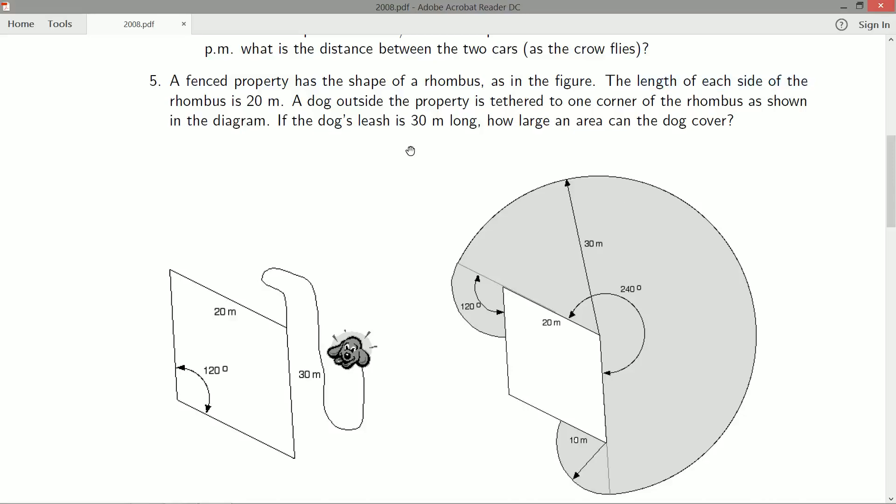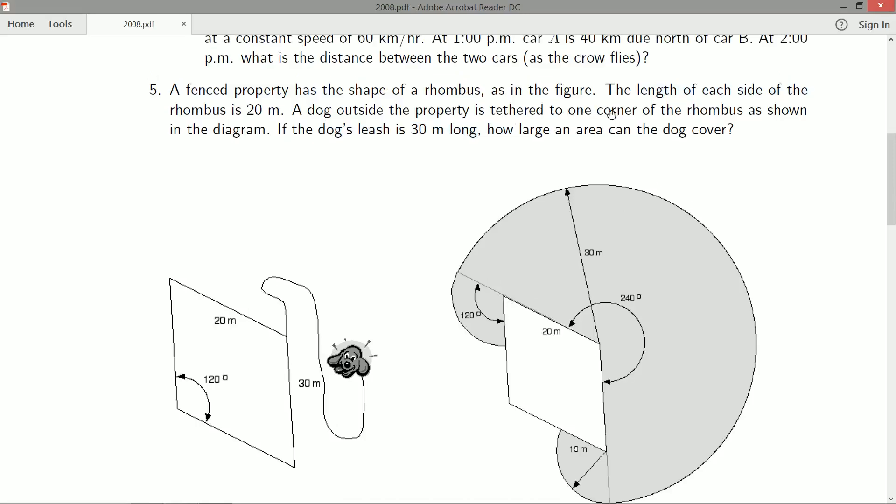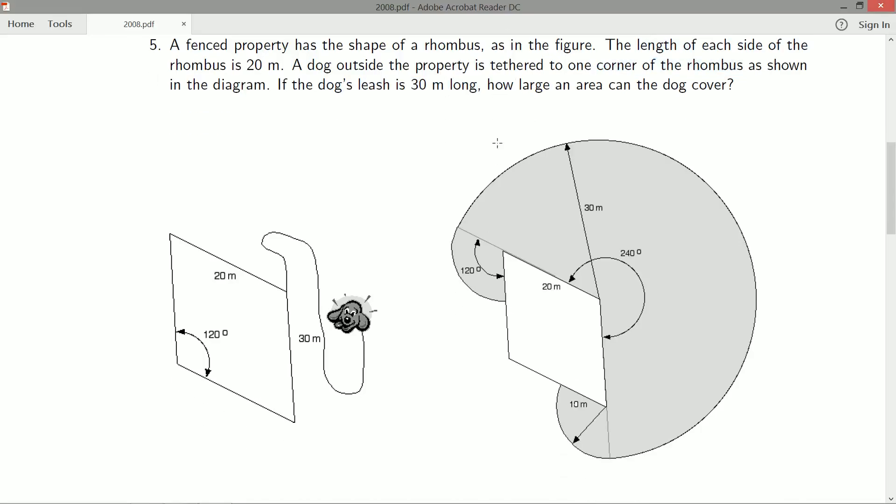A fenced property has the shape of a rhombus as in the figure. The length of each side of the rhombus is 20 meters. A dog outside the property is tethered to one corner of the rhombus as shown. Okay, there's our dog, there's the corner of the rhombus.